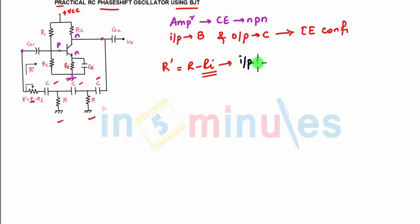That input resistance of the BJT will also come into the picture when you connect a resistance R over here. To nullify the effect, what we are doing is subtracting the resistance RI from the resistance R.